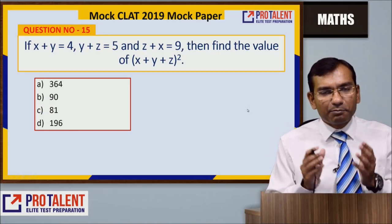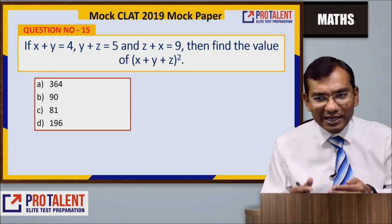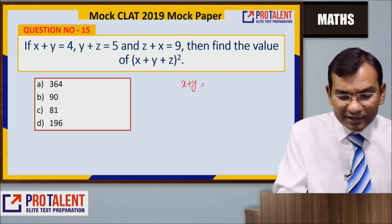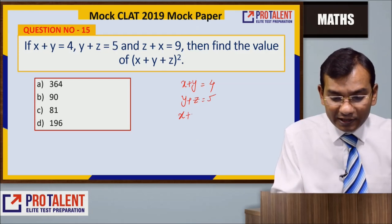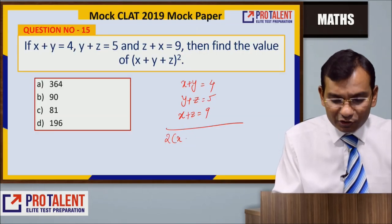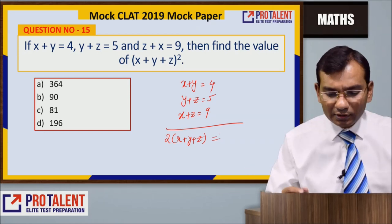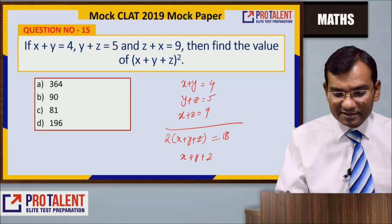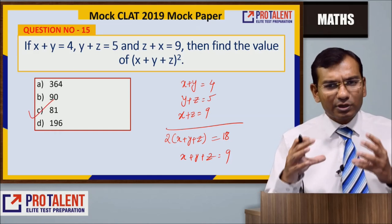Question number 15: x+y=4, y+z=5, x+z=9. Find (x+y+z)². This is a standard equation set. Add all three: 2(x+y+z) = 4+5+9 = 18, so x+y+z = 9. Therefore (x+y+z)² = 81. Just add all three equations — very quick.